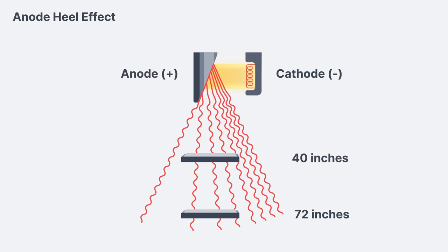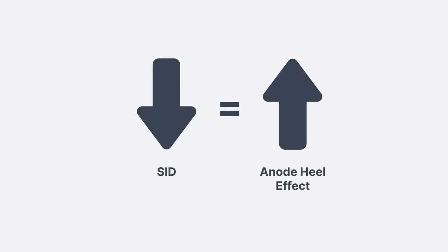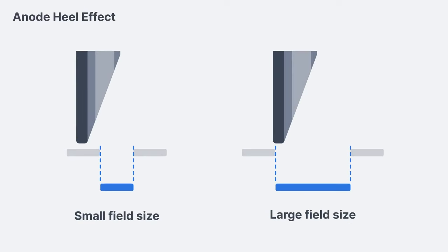Changes in SID also affect the extent of the anode heel effect. Decreasing or shortening the SID increases the heel effect. Shortening the distance causes the receptor to get exposed to more of the low intensity beam on the anode side and more of the high intensity beam on the cathode side. There is an increased difference in intensity, which is the same as saying there is an increased anode heel effect. The relationship between SID and the heel effect is inverse — as the SID decreases, the anode heel effect increases.